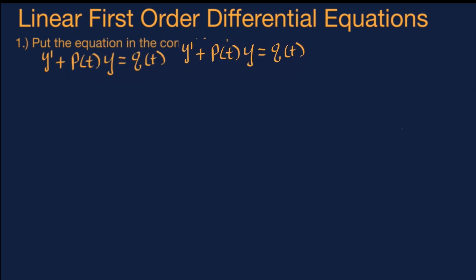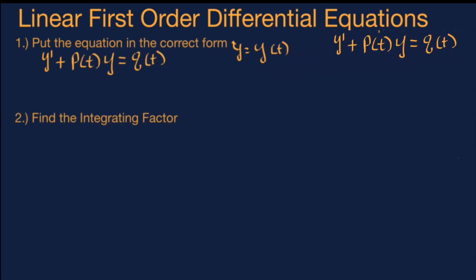Once you have your equation in this form, the next step is finding the integrating factor, which is a special function we will call i(t). We will come back to this step and find what that function is, but all you need to know for now is that when you take its derivative, you get the function itself times the coefficient of y, which is p(t).